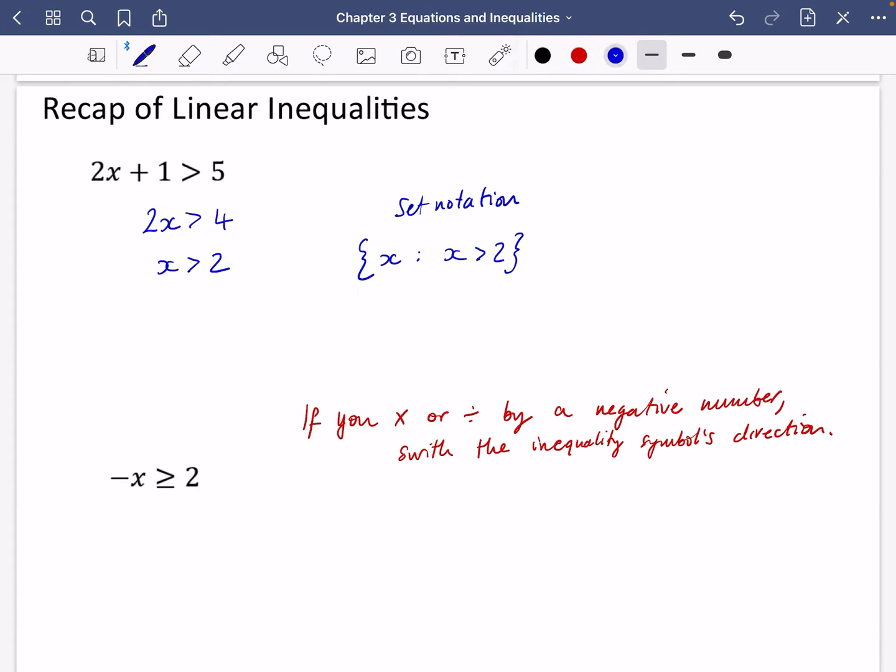So in this one that I've got here, if I multiply both sides or divide both sides, either one of them by minus one, I would get X and I would have minus two. And instead of it being this way around at the top, it would switch to this way around like this.